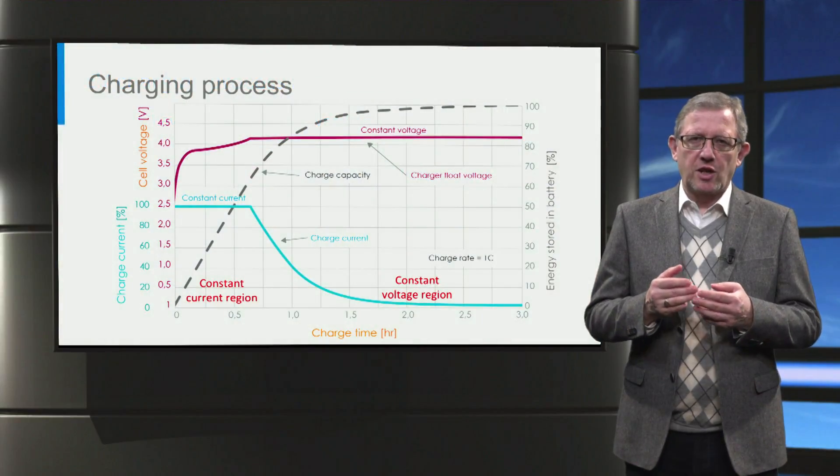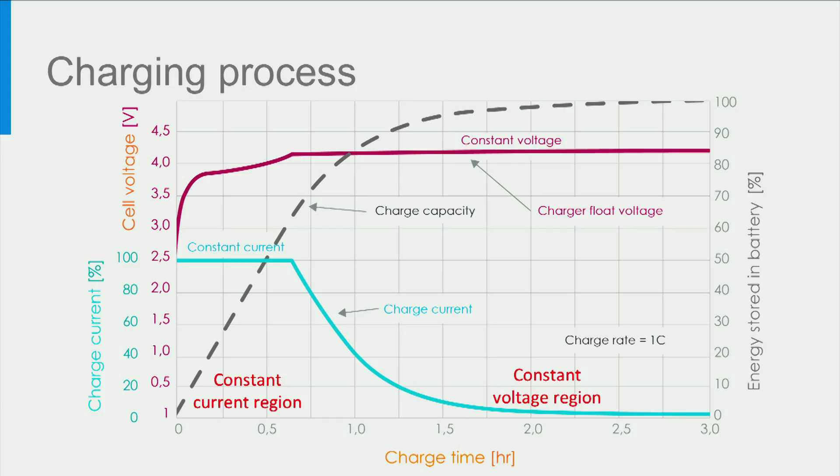Let us first start with the charging process. In this image, we can see the battery charging current, battery voltage and energy stored in the battery as a function of time, when a battery is charged. As seen in the image, when the charging of a battery starts, it typically charges at a constant current equal to or less than the nominal current of the battery.